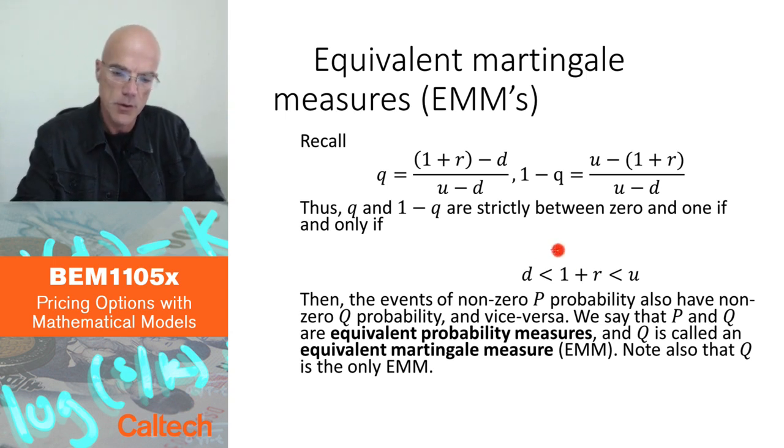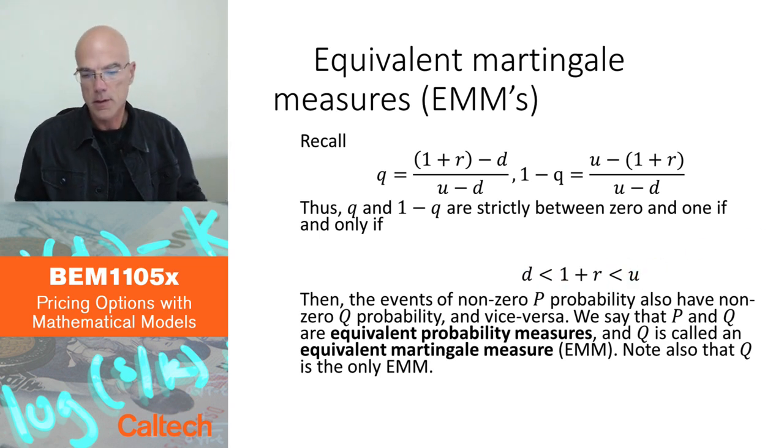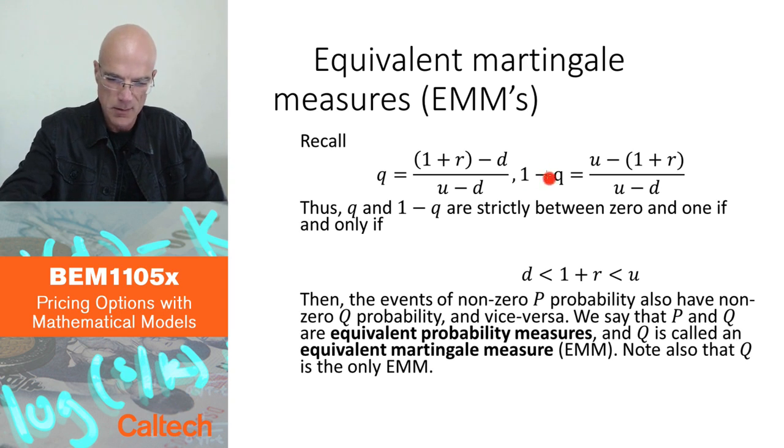That's equivalent to this condition that d is strictly less than 1 plus r, strictly less than u, which I already commented before is a no-arbitrage condition. So we can kind of see this first theorem already here: that having these martingale probabilities is the same as no-arbitrage, because this is really a no-arbitrage condition. And under this condition, these will be probabilities, between 0 and 1, and in fact strictly between 0 and 1.